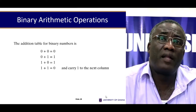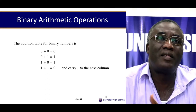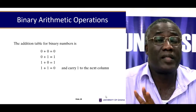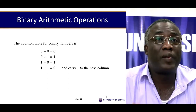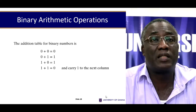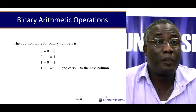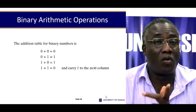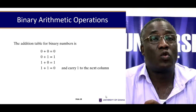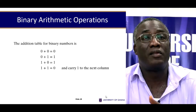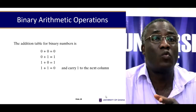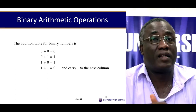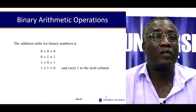How do binary numbers add? It's quite interesting. A 0 plus a 0 always gives you 0. A 0 plus a 1 gives you 1. A 1 plus a 0 gives 1. And a 1 plus a 1 gives 0 but you carry 1 to the next column — just as adding 1 to 9 gives 10: you write 0 and carry 1. The same way, 1 plus 1 in binary is 10: write 0, carry 1.